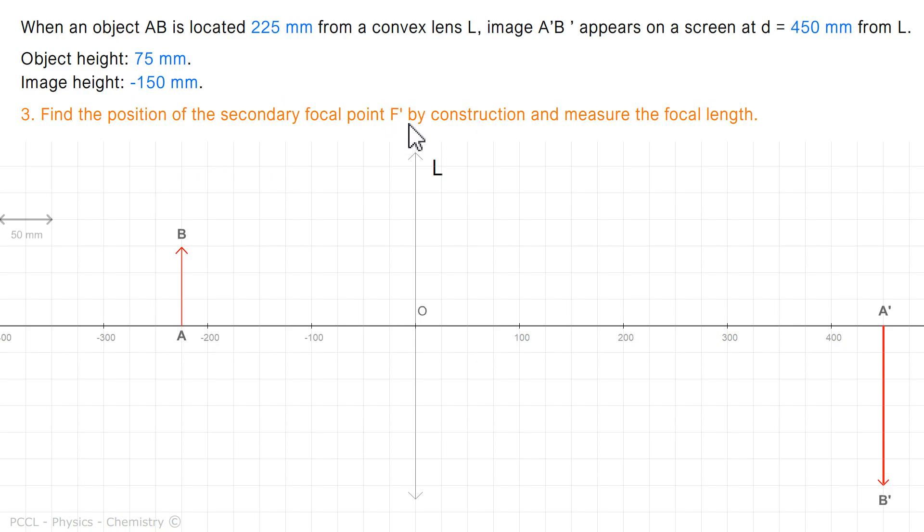How to locate F'? Well I know that the ray coming from B, parallel to the optical axis, will emerge passing through F'. Of course I extend it to B'. The point of intersection here is F', the secondary focal point. This is what I am asked. This allows me to find the focal length, here, which is therefore 150 mm, by construction.